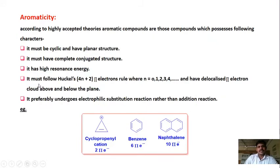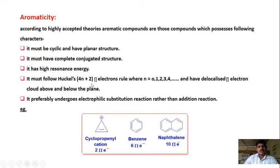Fourth, it must follow Hückel's rule. Hückel's rule states that when a compound is said to be aromatic, it should have 4n + 2 pi electrons, where n is any integer. When n equals zero, 4×0 + 2 gives 2 pi electrons. When n equals one, 4×1 + 2 gives 6 pi electrons. So a compound with six electrons in a conjugated planar cyclic structure comes under the class of aromatic compounds.